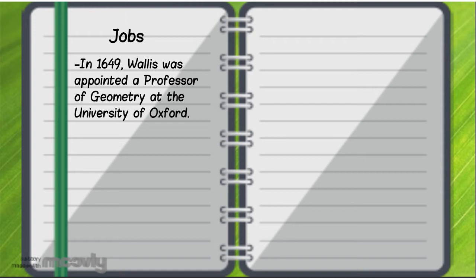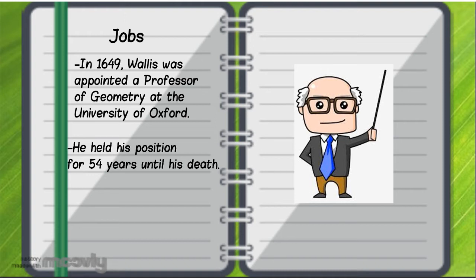In 1649, Wallis was appointed a professor of geometry at the University of Oxford. He held his position for 54 years until his death.